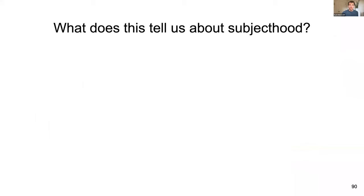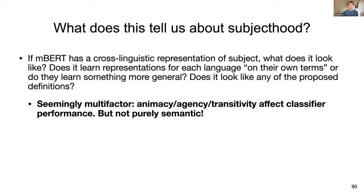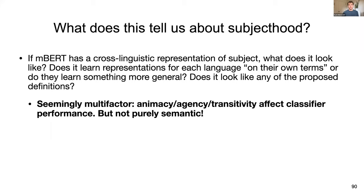If BERT has a cross-linguistic representation of subjecthood, what does it look like? Does it learn representations for each language on their own terms, or something more general? Does it resemble any of the proposed linguistic definitions? It's seemingly multi-factor but not purely semantic. More work is needed to fully understand what this classification task is doing, but it seems an interesting and useful tool for exploring these questions.